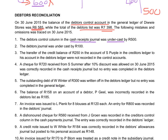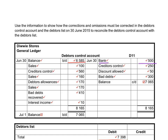The debtors journal was undercast by 100 rand — we added up too little. No mistake in the individual account, so no mistake in the debtors list. When we record an entry in the debtors journal it is for goods sold on credit, so we debit the debtors control account. It was undercast by 100, so we add another 100 rand on the debit side of the debtors control account and credit the sales account with 100.